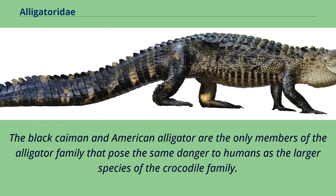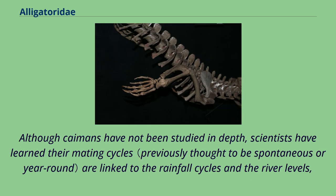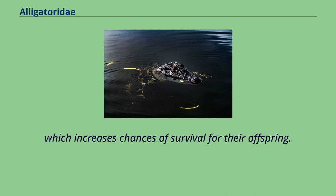The black caiman and the American alligator are the only members of the alligator family that pose the same danger to humans as the larger species of the crocodile family. Although caimans have not been studied in depth, scientists have learned their mating cycles are linked to the rainfall cycles and river levels, which increases chances of survival for their offspring.